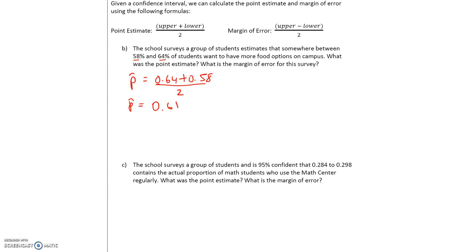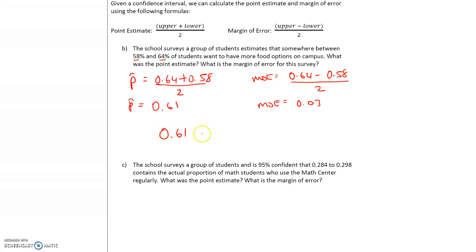Then we find the margin of error. The margin of error is going to be the upper, which is 0.64, minus the lower, which is 0.58, divided by 2. So the margin of error is 0.03. Written using the plus or minus notation, it will be 0.61 plus or minus 0.03, which is p-hat plus or minus the margin of error.